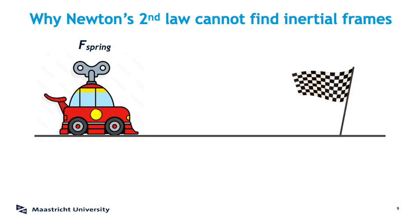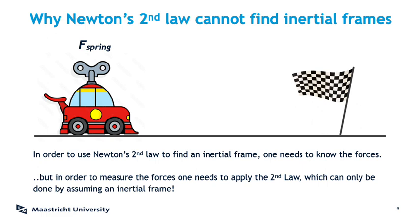That sounds very waterproof, but unfortunately it will not work. That's because we made a secret assumption: we assumed that we knew the forces on the car beforehand — here, the spring force of the spring that makes the car go. But that means that we had to measure this force beforehand. How would we have done that? By winding up the spring, measuring the acceleration of the car, and putting it back into Newton's second law to find F spring. But we can only do that if we already knew there were no fictitious forces, because otherwise our measurement of the acceleration will not just give us F spring, it will also tell us something about the fictitious force. That's circular reasoning.